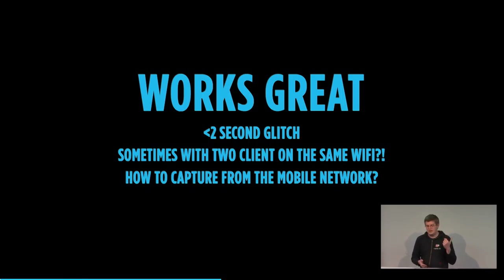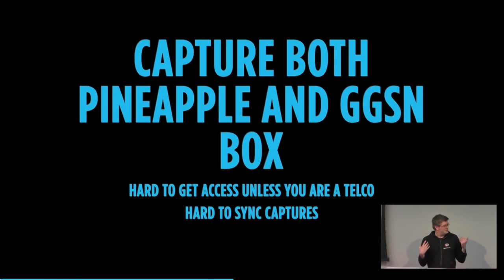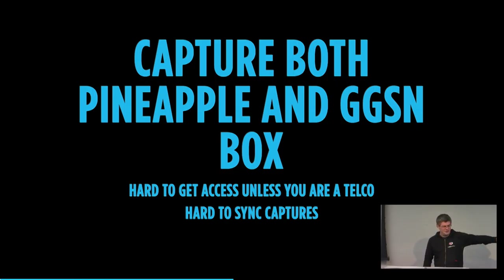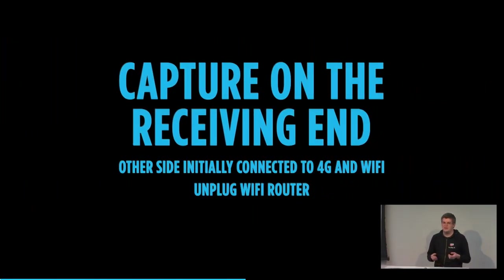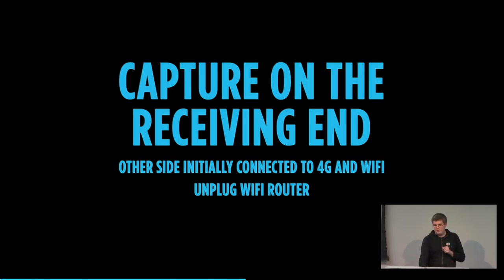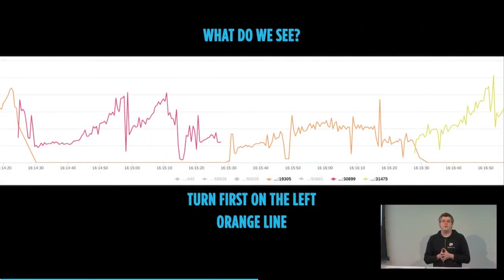How do you capture stuff from the mobile network to observe this behavior? I work for a telco — Appyrion is part of Telenor — so I thought maybe I can use my Pineapple on one end and a GSM gateway support node box on the other. It's a little hard to get access to those boxes even as a telco, and it's very hard to sync those two capture files. Fortunately there's an easier way: capture the receiving end of the call. The other side is initially connected to 4G and Wi-Fi, then at some point you just unplug the Wi-Fi router.